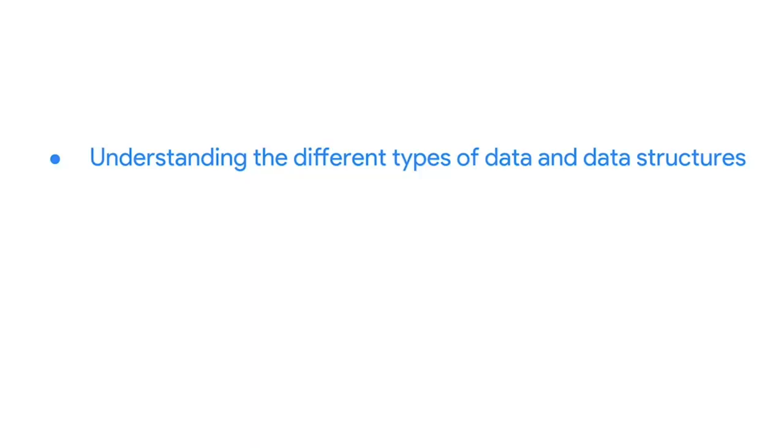Picture this. You're working on a project. You've asked all the right questions, applied structured thinking, and you're completely in sync with your stakeholders. You're off to a great start. But there's another step in the process: preparing the data correctly. This is where understanding the different types of data and data structures comes in.